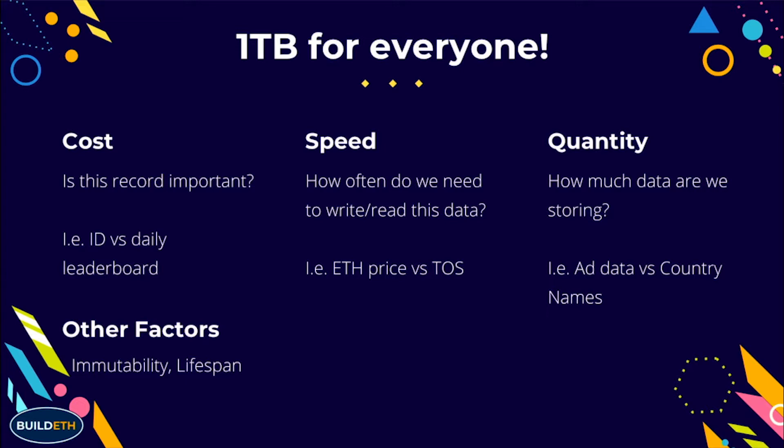A simple example here: the Ethereum price versus terms of service. The Ethereum price is going to update constantly, so you don't want to hit the chain that much for that. Whereas a TOS is something that's there constantly and doesn't change as much. Lastly, quantity — how much data are we storing? Something like ad data versus country names: there's a set amount of countries and that won't expand much, whereas ad data is voluminous, grows every day, and is not as valuable, so it can be deprecated as we go on.